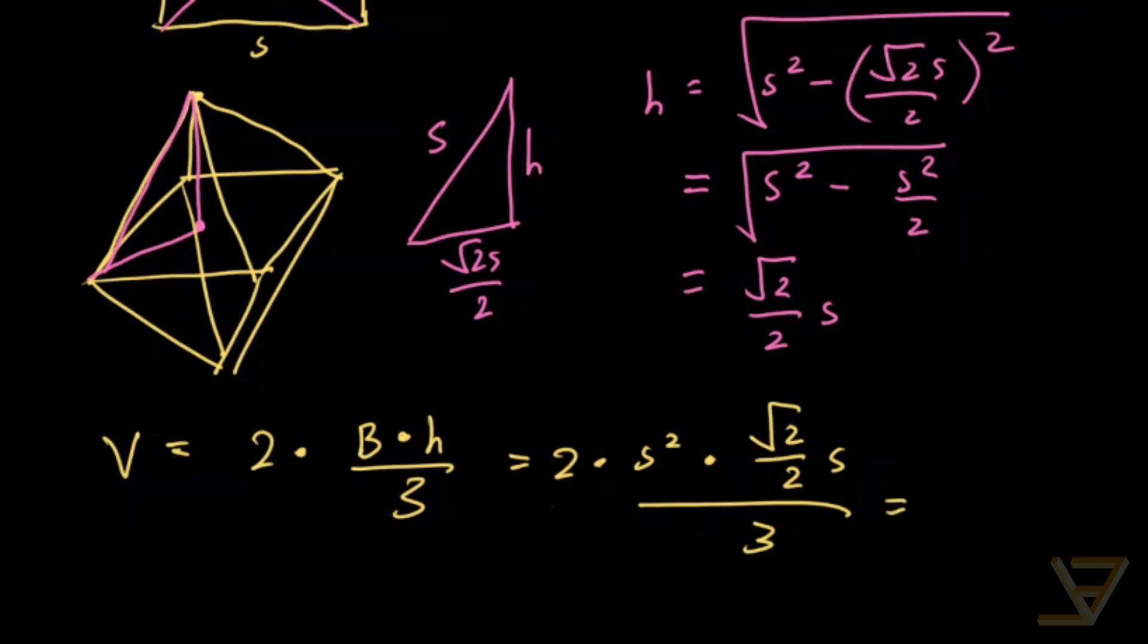And that, if you do the computation, the twos cancel out here. And what we're left with is square root of two s cubed over three. And that's the volume of the octahedron.